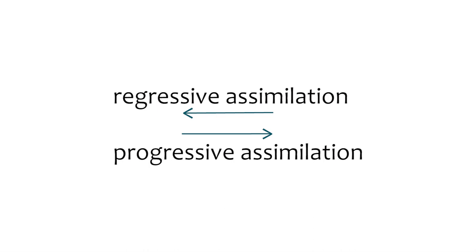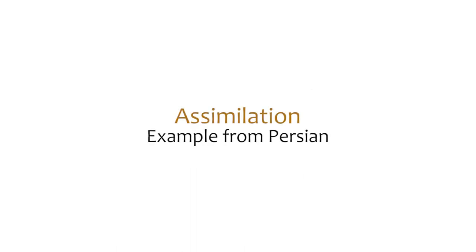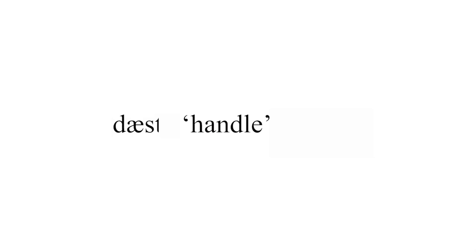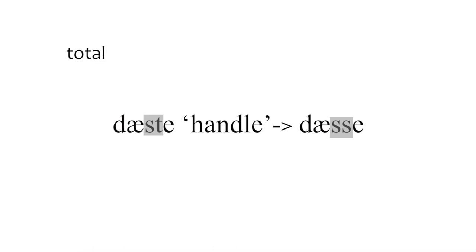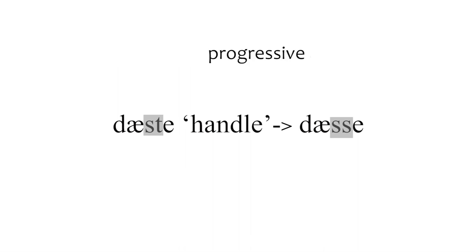Now for progressive assimilation — let me give an example from Persian. The word for 'handle' is 'daste'. A Persian speaker saying it fast pronounces it as 'dasse' — 't' followed by 'a' becomes 's' followed by 'a', so 'ta' becomes 'sa'. This is total assimilation because one sound becomes totally the other. It is contiguous because it is between two adjacent sounds. And is it regressive or progressive? It is progressive — the following sound becomes similar to the previous sound, so the direction of influence is forward.